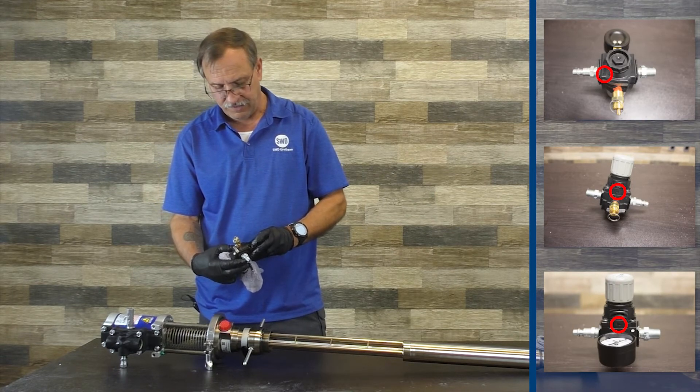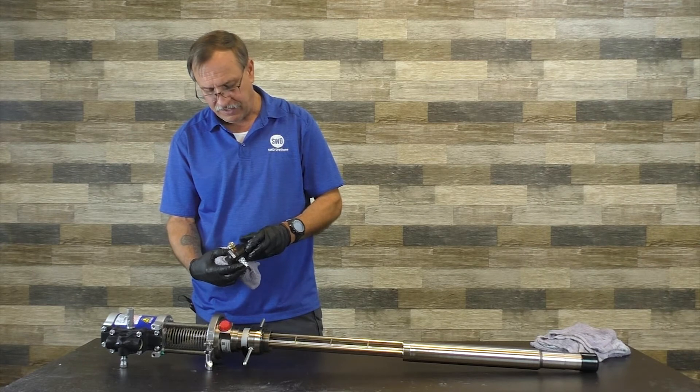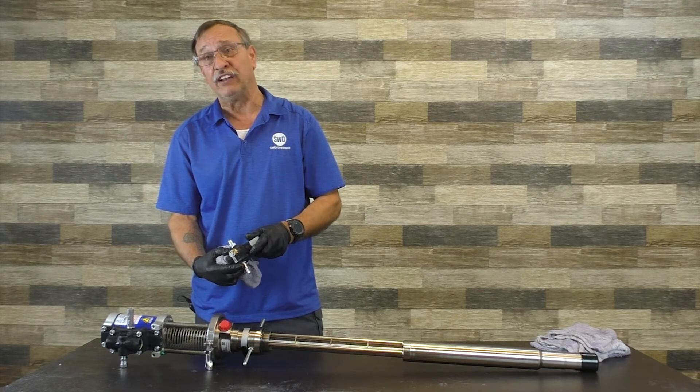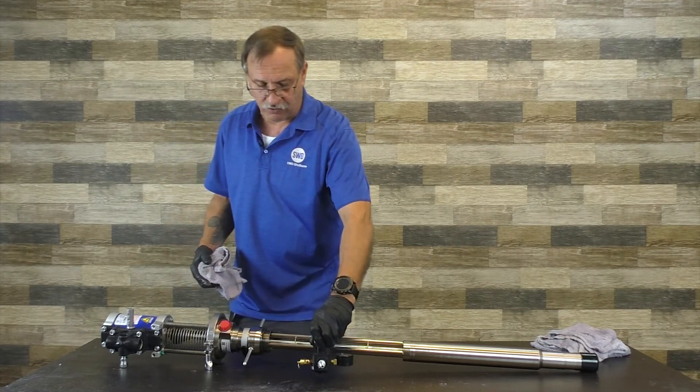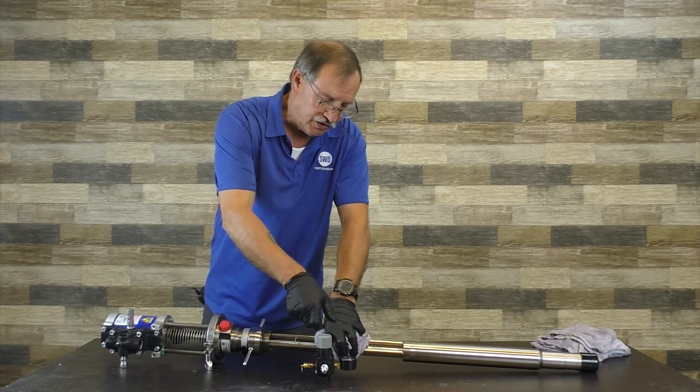If you put it in backwards, which people have, as soon as they put air to it, this will open up and bleed off the air. It'll say hey, the regulator is not working. Well, it's not reading nothing because it's blowing it off. This is a standard regulator. You pull it out, turn it to where you want, push it and lock it.